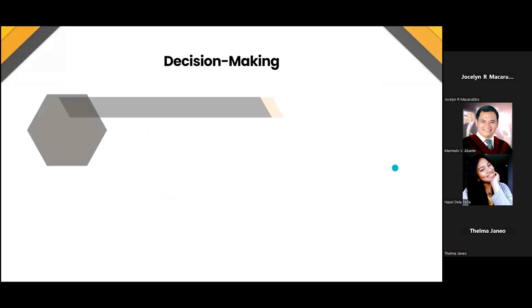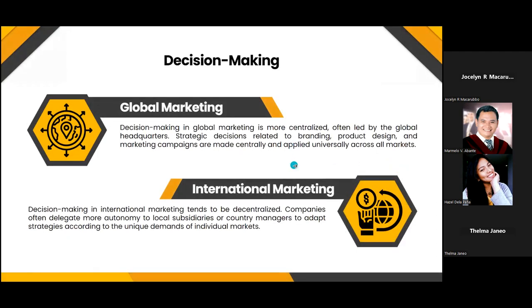The next difference is decision-making. Decision-making in global marketing is more centralized, often led by the global headquarters. Strategic decisions related to branding, product designs, and marketing campaigns are made centrally and applied universally. In international marketing, decision-making tends to be decentralized — companies often delegate more autonomy to local subsidiaries or country managers to adopt strategies according to the unique demands of individual markets, since they better understand what is needed in their specific market.